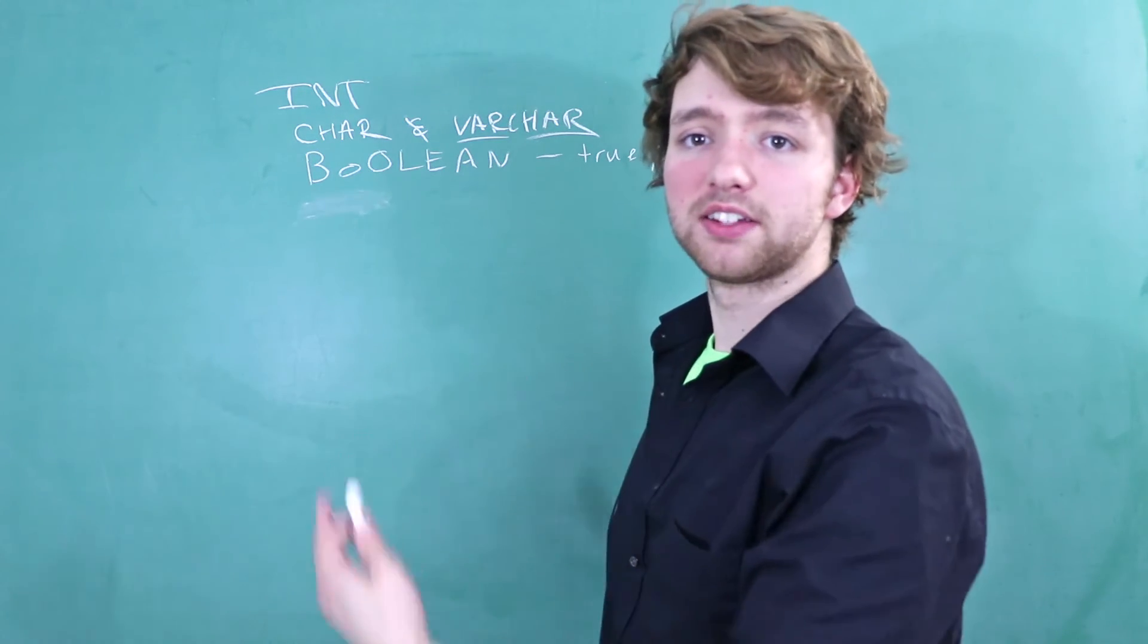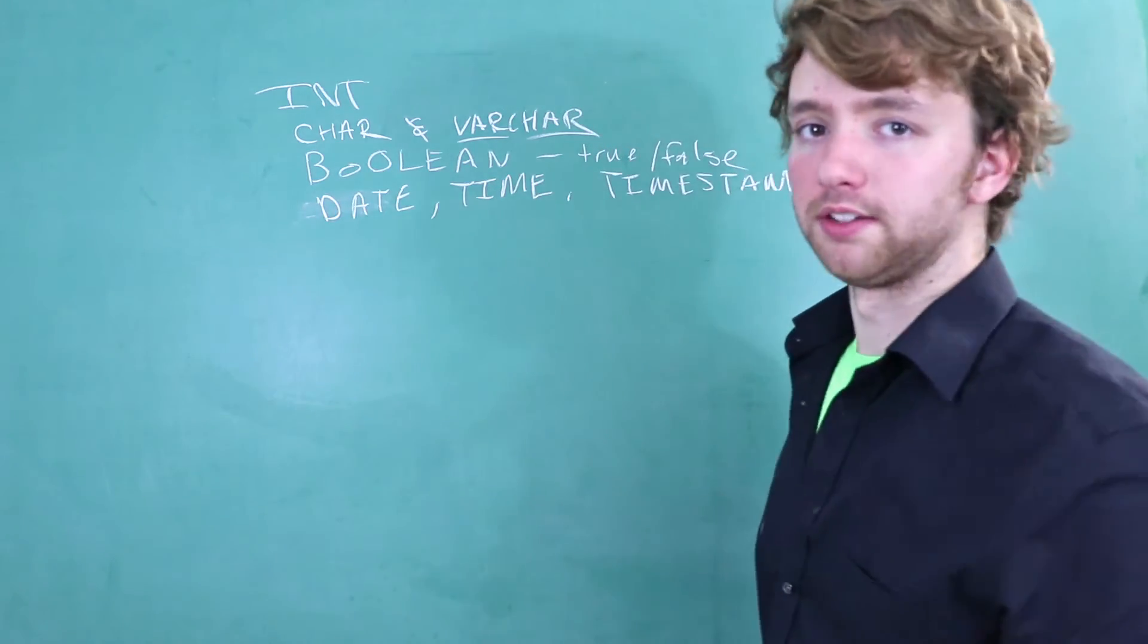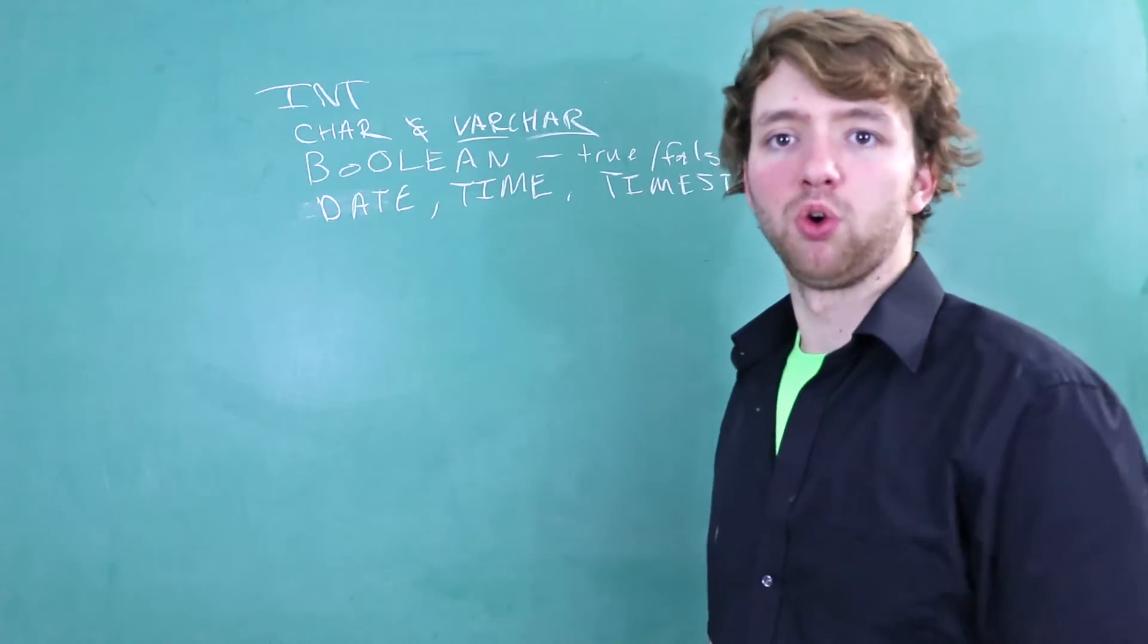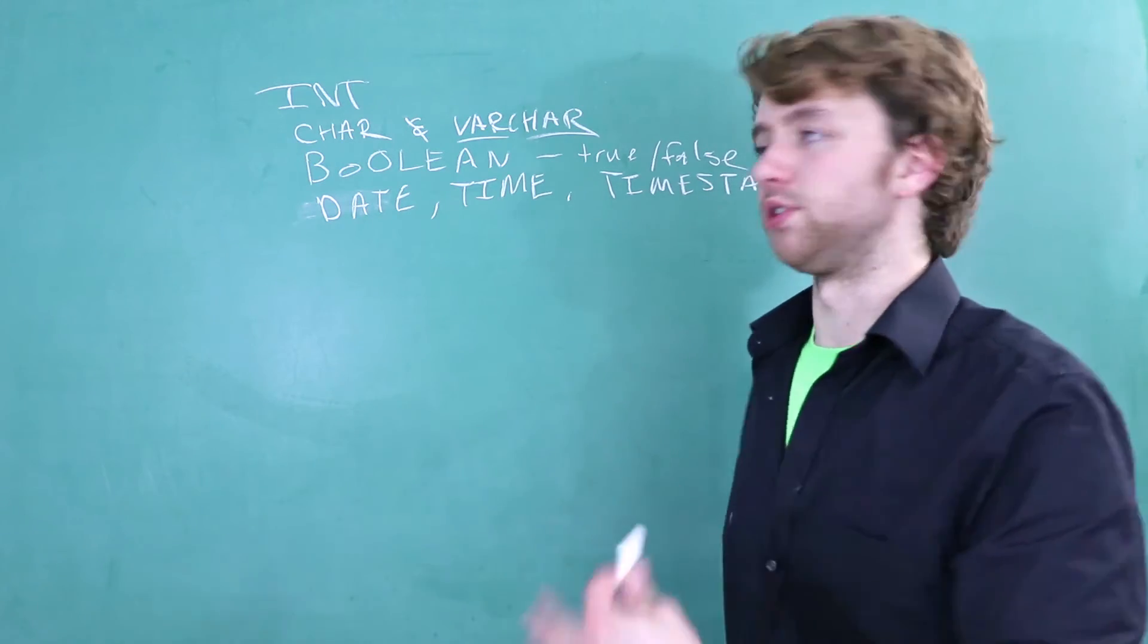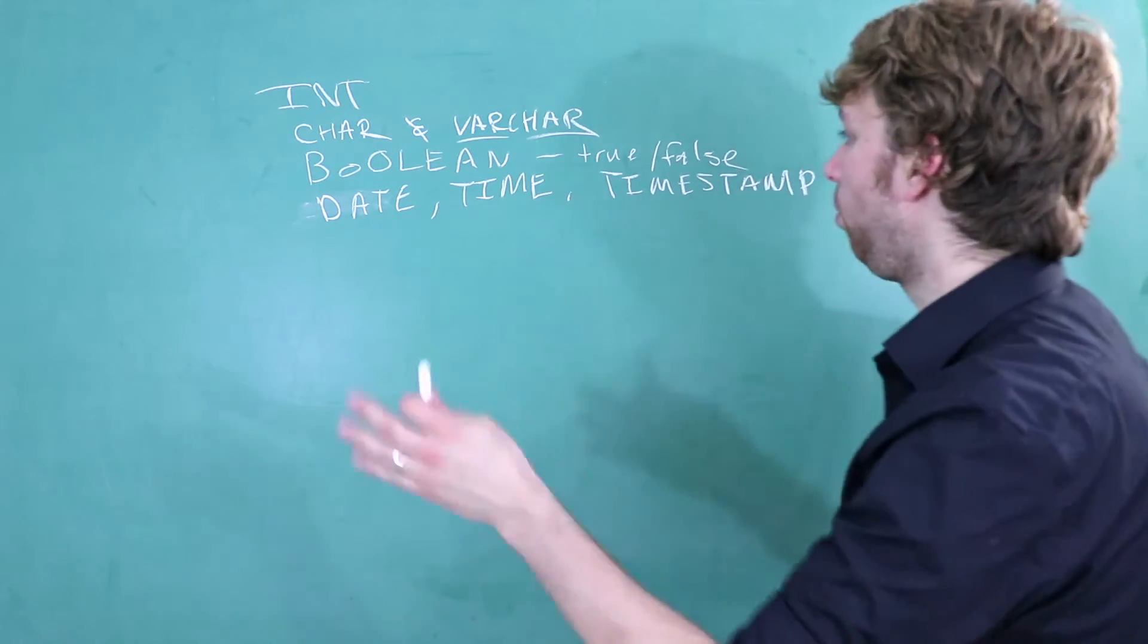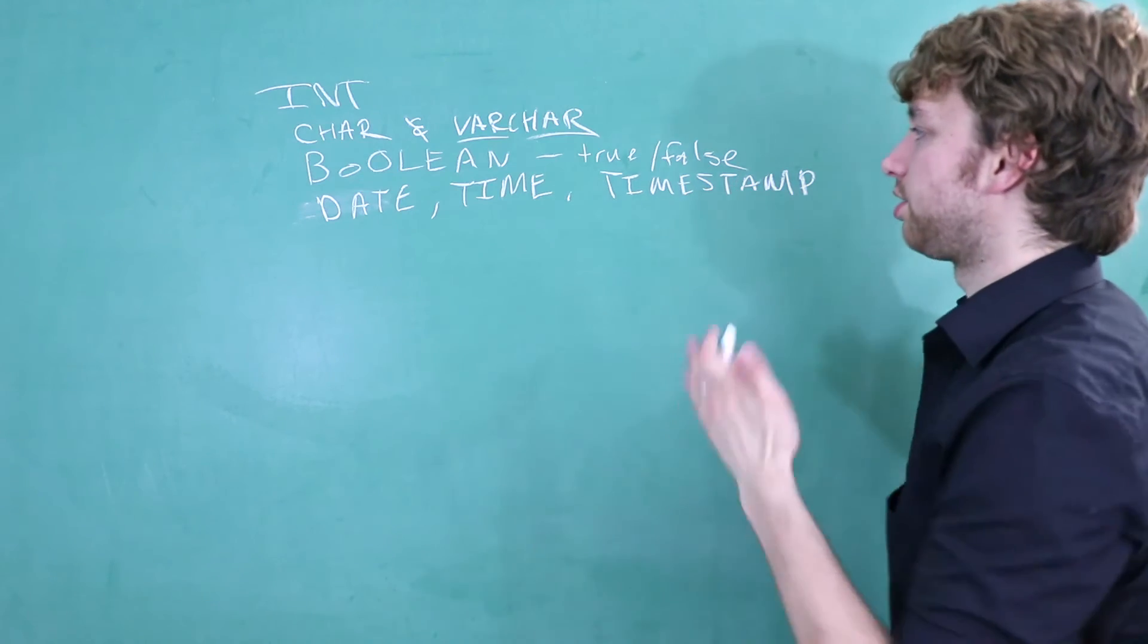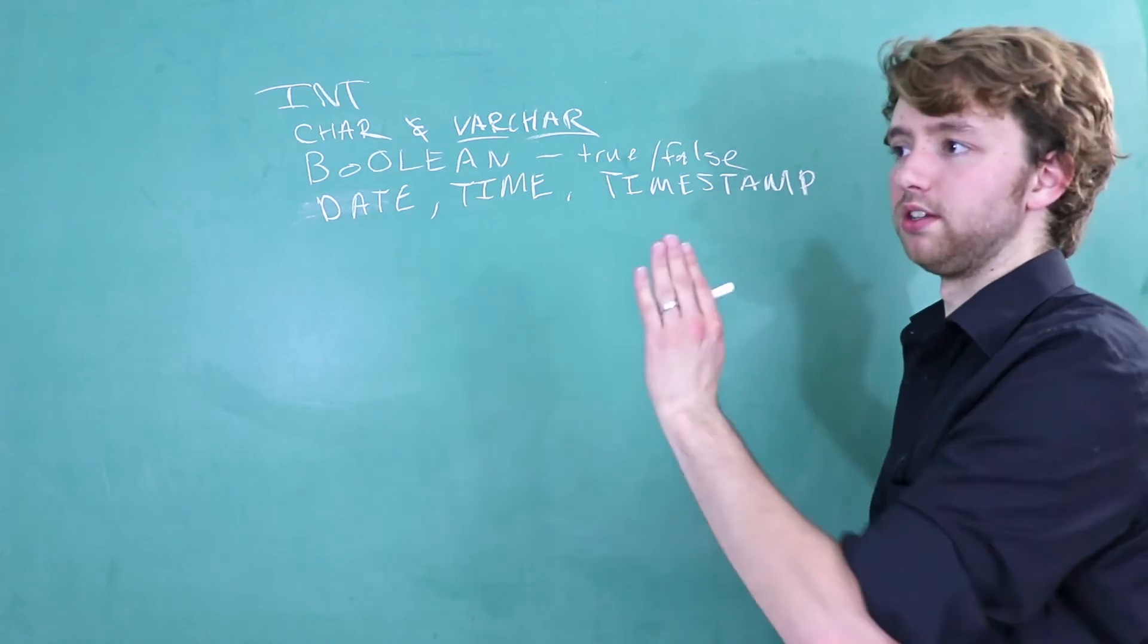The next data types are date, time, and timestamp. These are the temporal data types. Date just stores a date, history or in the future. Time will store a specific time of some day. It doesn't actually store the date part, so the date is irrelevant for this data type. Or you can have kind of like a combination of both in what's called a timestamp. So this is kind of just like an instant in time, past, present, or future.